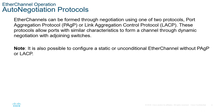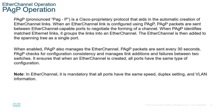There are two means of configuring EtherChannel. You may set up PAGP — Port Aggregation Protocol — which is Cisco proprietary, or LACP — Link Aggregation Control Protocol — which is an IEEE standard. PAGP aids in the automatic creation of EtherChannel links. Packets are sent between EtherChannel-capable ports to negotiate the forming of a channel. When PAGP identifies matched Ethernet links, it groups the links into an EtherChannel, which is then added to the spanning tree as a single port. PAGP packets are usually sent every 30 seconds.